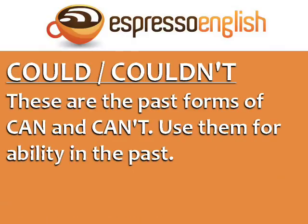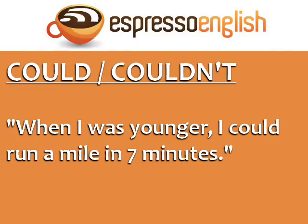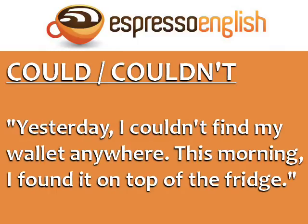Could and couldn't are the past forms of can and can't. Use them for ability in the past. For example, when I was younger, I could run a mile in seven minutes. Yesterday, I couldn't find my wallet anywhere.